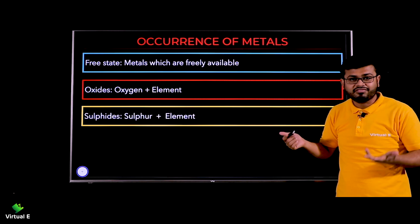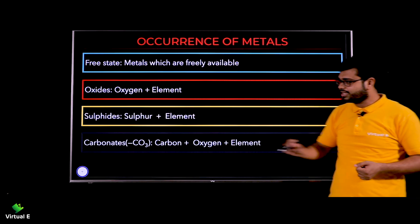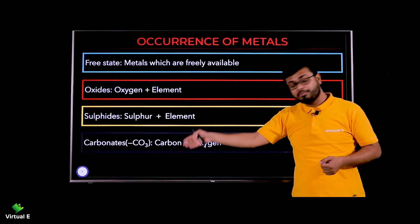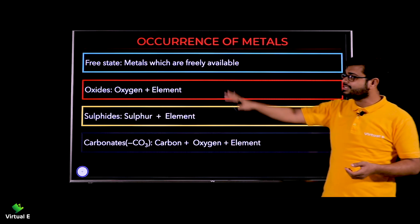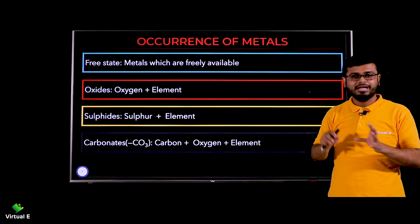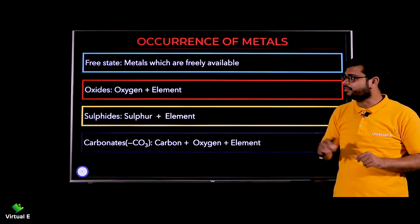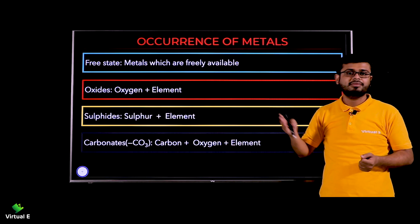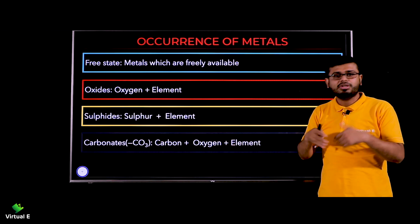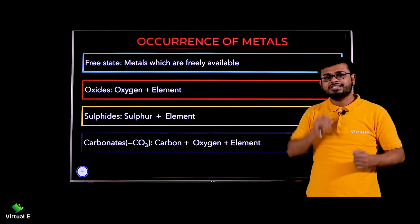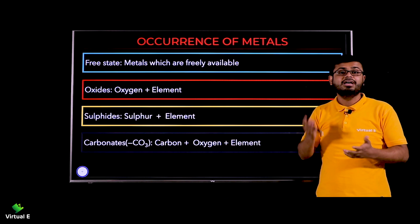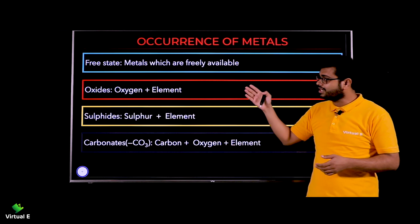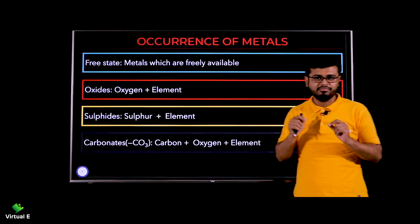Next is about sulfides — if the element has formed a compound with sulfur, it is called a sulfide. Then carbonates — a carbonate contains carbon, oxygen, and the element together. So to summarize: free state means raw/directly available (e.g., gold); oxide means compound with oxygen; sulfide means compound with sulfur; and carbonate means compound with carbon and oxygen. These are the four key terms to remember.